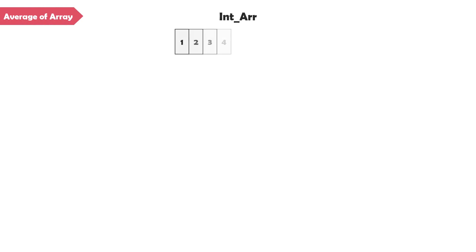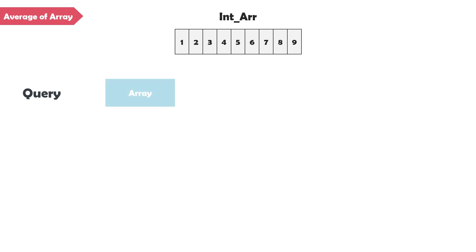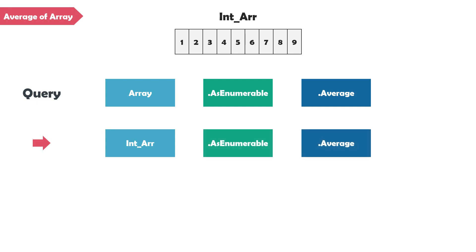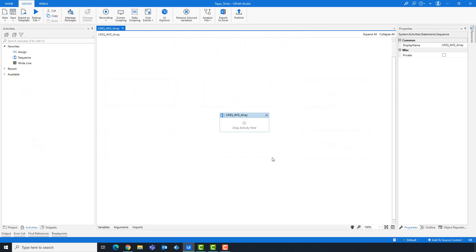Let's start with the first part: average of numbers in an array. I have this integer array, which consists of 9 numbers. I want to calculate the average of these numbers. Let's see how the query looks like. We first set the array variable, then the function AsEnumerable, and at the end comes the average function. Let's set the query for this array — first we set the array variable, then the other two functions. That's it. Very easy. Let's implement it in UiPath.